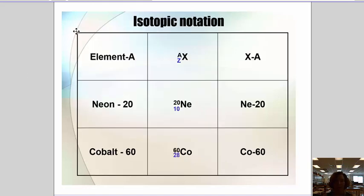Pause and jot down this chart here. These are three different ways that we notate isotopes. We can write the name of the element followed by the mass number. Remember mass numbers are protons and neutrons. For example, neon-20, cobalt-60.